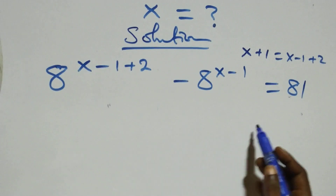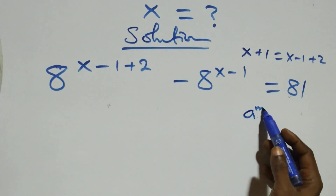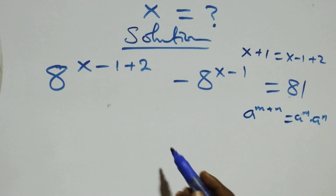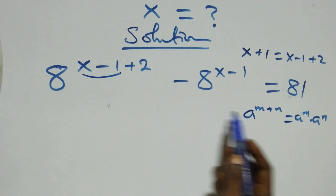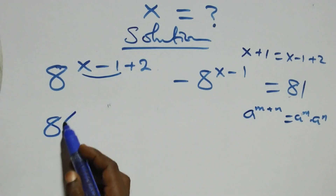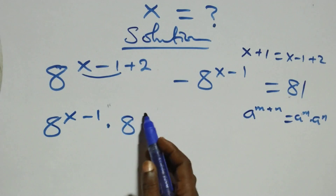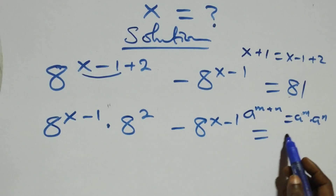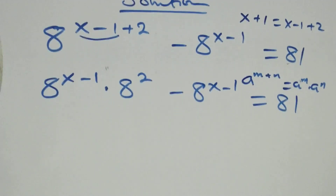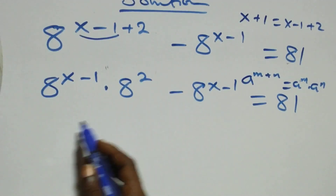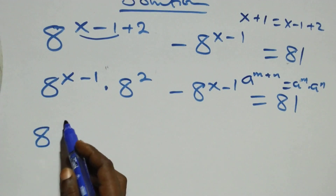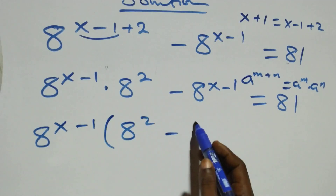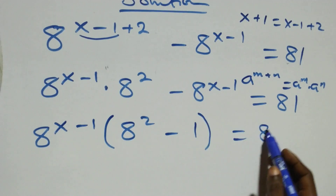Next step, we apply the law of indices: a raised to power m plus n is the same thing as a raised to power m times a raised to power n. Here we treat x minus one as m, so this becomes 8 raised to power x minus one times 8 squared, minus 8 raised to power x minus one, equals 81. Since 8 raised to power x minus one is common, factoring gives 8 raised to power x minus one times the bracket 8 squared minus one, equals 81.